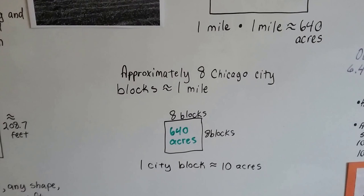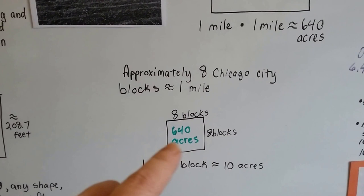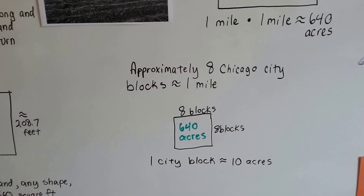So that means if we took 640 and divided it by 8 times 8, which is 64, we'd get approximately 10 acres for each Chicago city block.